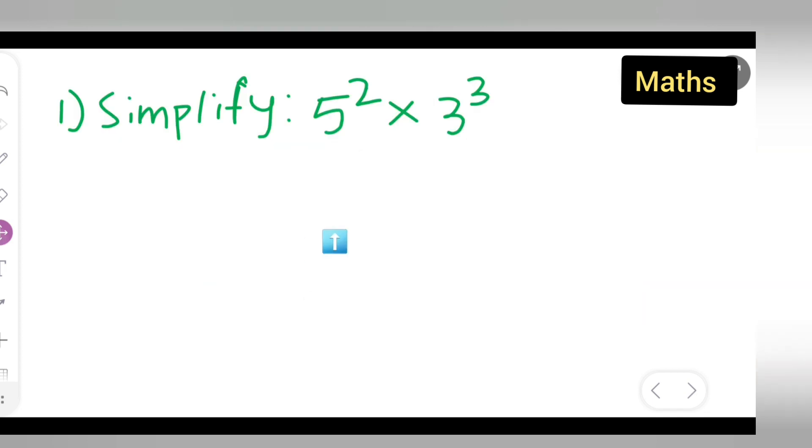First, take down the question: simplify 5 raised to power of 2 multiplied by 3 raised to power of 3. That means 5 square and 3 cube. Write down 5 square as it is, multiplied by 3 cube.